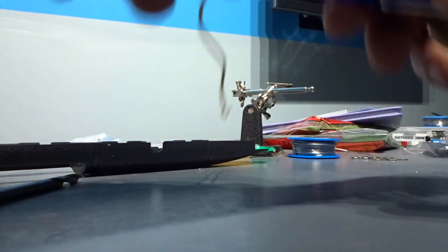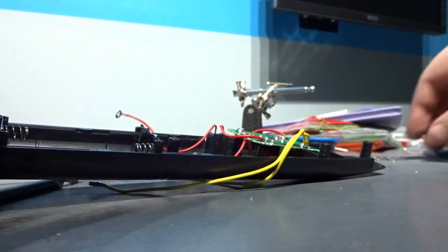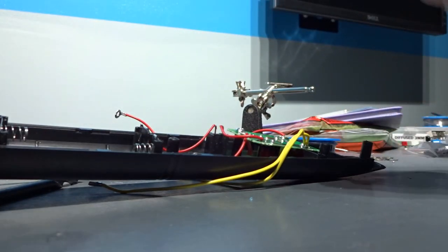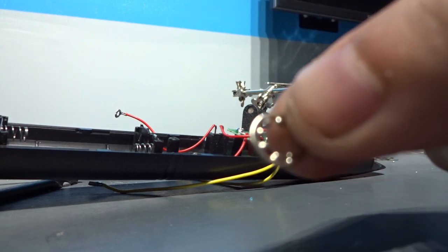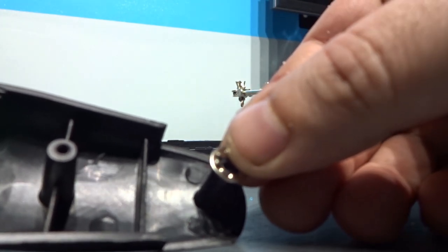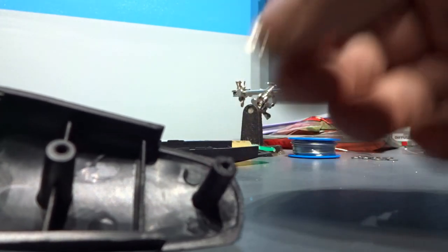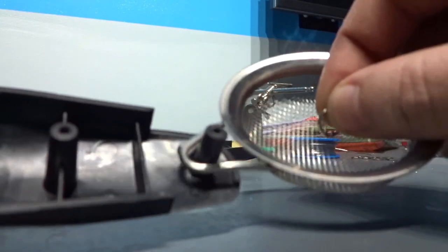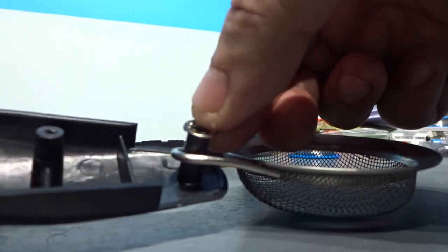You can't solder to this because it's stainless steel, so I'm going to be using retention washers. I'll put a couple around this center pole, wrap the wire around, put two of them in, and sandwich the wire in the middle like that.